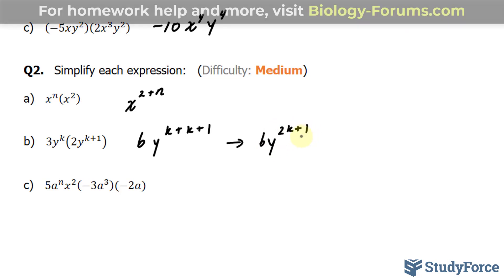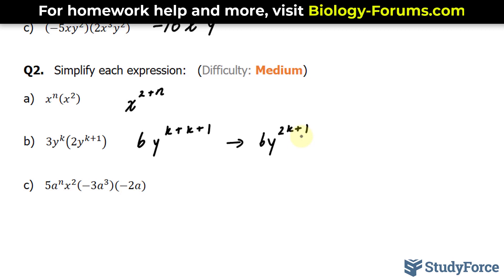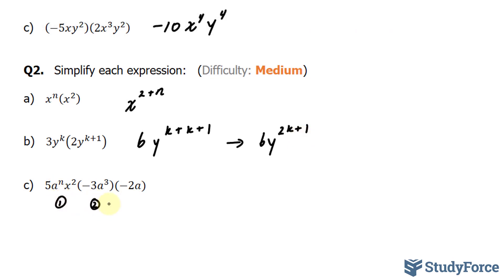And in our final example, we have 5a to the power of n times x to the power of 2. Technically, we have 3 monomials. Let's multiply the numbers out. 5 times negative 3 times negative 2. These two negatives make a positive. It makes 6. 6 times 5 is 30. And then I'll move on to the a's. We have a to the power of n times a to the power of 3 times a. n plus 3 plus 1 is a to the power of n plus 4. 3 and 1 are like terms. And finally, we only have one x factor in all of this expression, so we'll write down x to the power of 2.